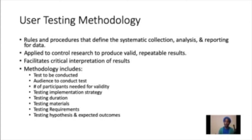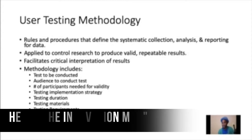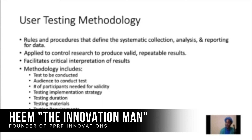The types of things you use in your methodology help build a profile around how, when, and in which ways you should be conducting user testing. Some of the things methodology includes are: the number of tests to be conducted, the audiences to be tested, the number of participants needed for data validity, the testing implementation strategy, the duration of testing, the materials needed, the requirements, and the hypotheses you're trying to test, along with the expected outcomes.